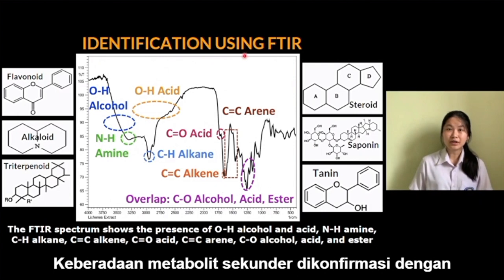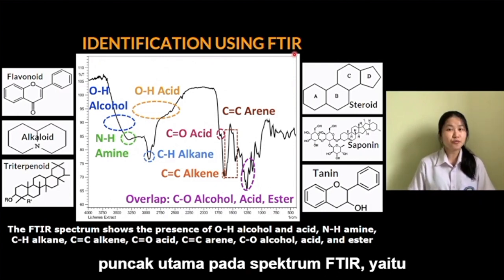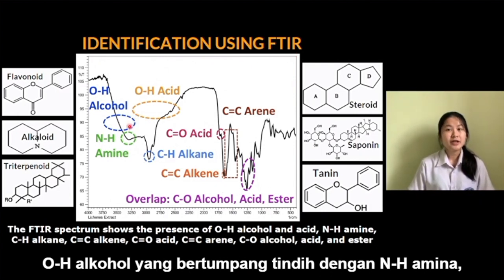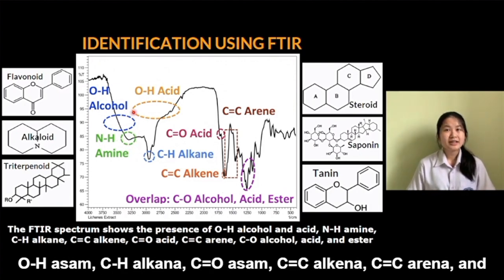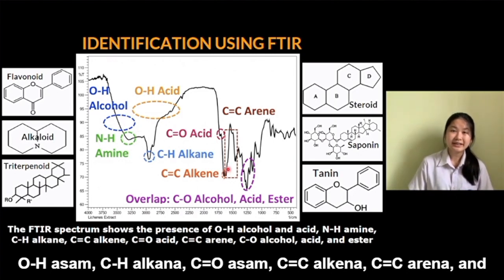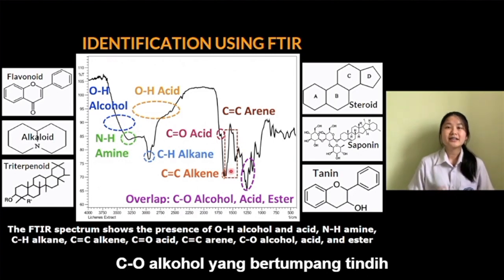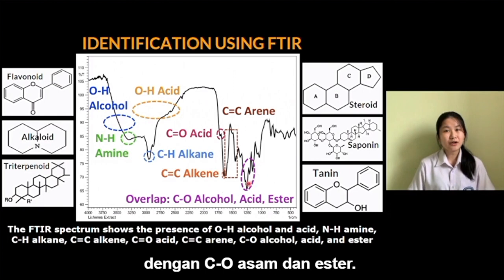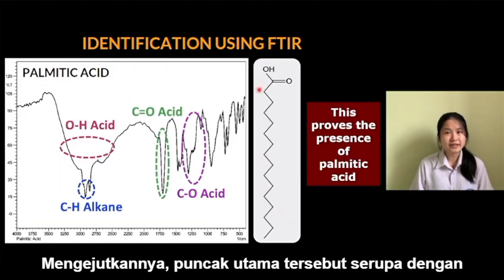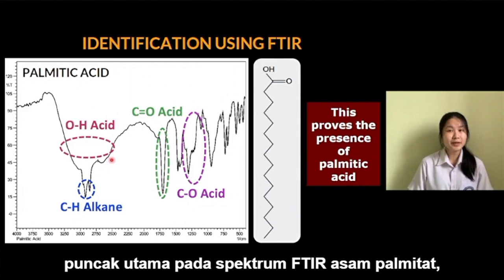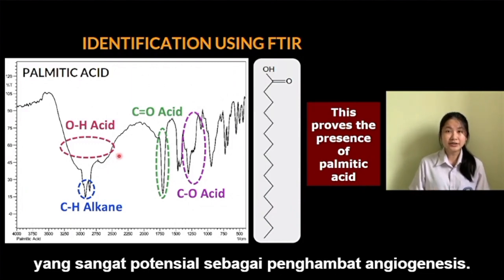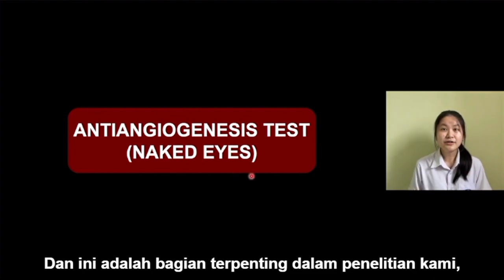The presence of secondary metabolites was confirmed by the major peaks in the FTIR spectrum, which are: OH alcohol, OH acid, C-H alkane, C=O acid, C=C alkene, C=C aromatic, and C-O alcohol, which correspond to C-O acid and ester. Surprisingly, these major peaks are similar to those in the FTIR spectrum of palmitic acid, which is very potent as an angiogenesis inhibitor.